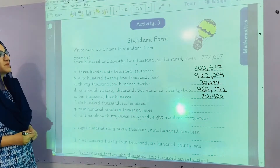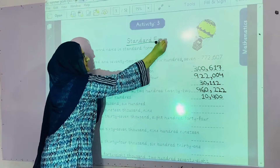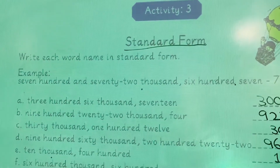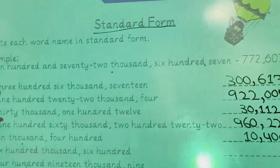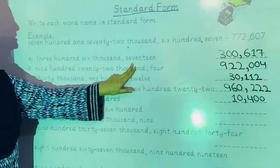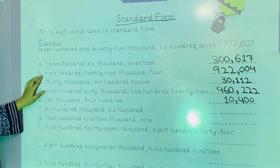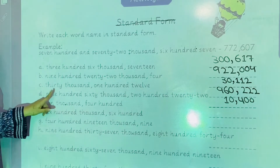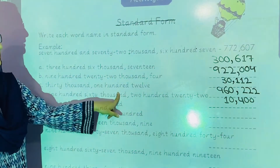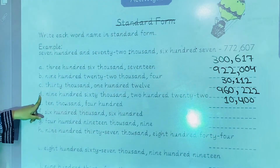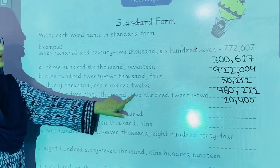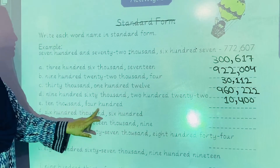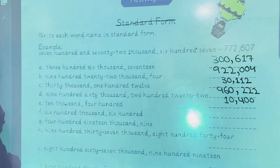Now we will start activity number three, that is standard form. The numbers given are: 602,190; 922,004; 30,112; 960,222; and 10,400. In this way, you will complete this activity.